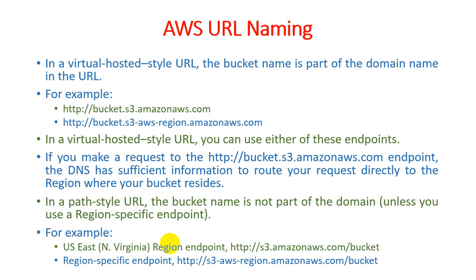For example, the US East N. Virginia region endpoint is: http://s3.amazonaws.com/bucket. For region-specific endpoints, it follows the pattern: http://s3-aws-region.amazonaws.com. You must specify a region through which you can access your web services and cloud resources using a specific bucket. In summary, AWS URL naming has two types: virtual-hosted-style and path-style.